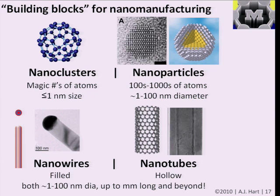The distinction between a nanowire and a nanotube is that one is filled and one is hollow. There are materials in which you can make both, and others where crystal structure dictates the typical form. For example, graphitic carbon wants to be sheets, so you're more likely to make a tube of carbon rather than a solid wire. Silicon wants to be a three-dimensional crystal, so you're more likely to make a silicon nanowire rather than a nanotube — though you might use more interesting strategies to cut out the center if you wanted to make a silicon tube.